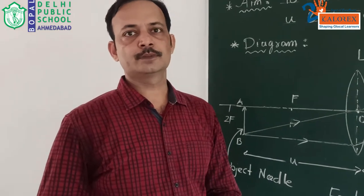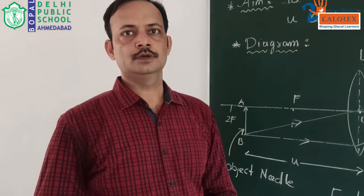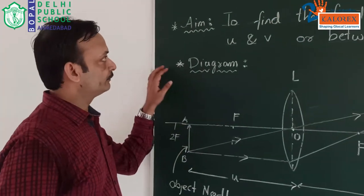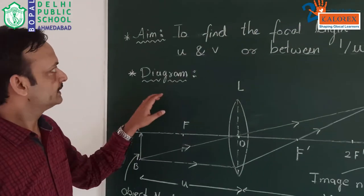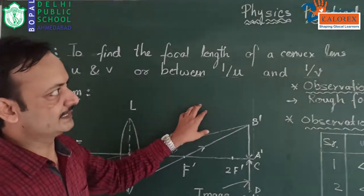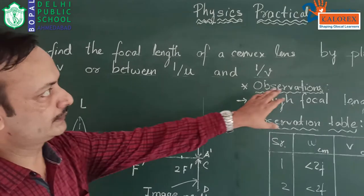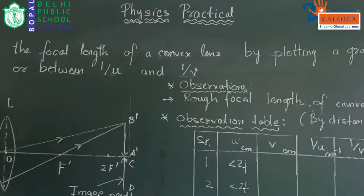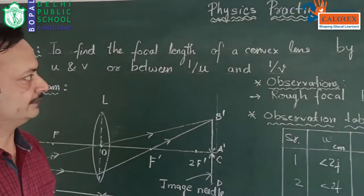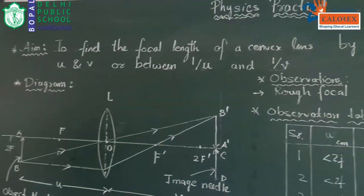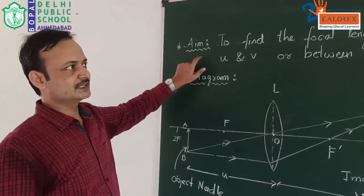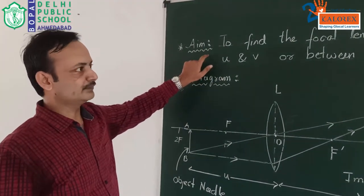We are going to do the experiment relating to focal length of a convex lens. The aim of your experiment is to find the focal length of a convex lens by plotting a graph between u and v, or between 1/u and 1/v. This is the aim of your experiment and the first thing you have to do is write the aim.